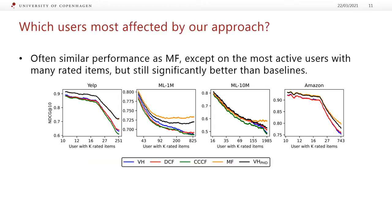We do an ablation of which users are most affected by our approach. If we group users by their activity — how many rated items they have — we often achieve similar performance to MF, except on the very most active users with many rated items in the different datasets. But still, compared to the baselines, we obtain significantly better performance.